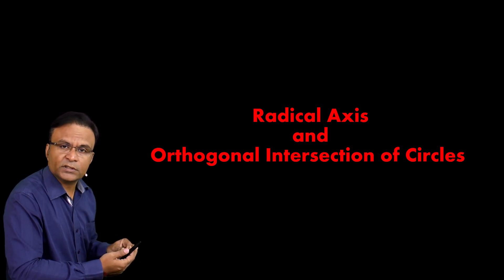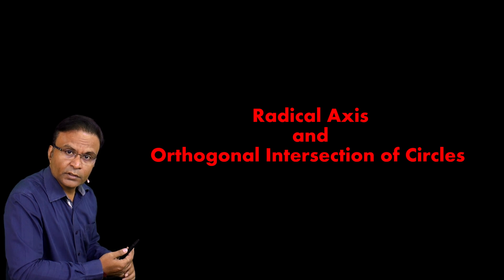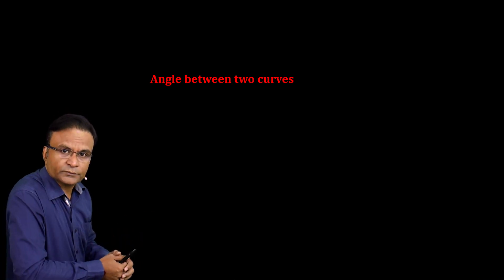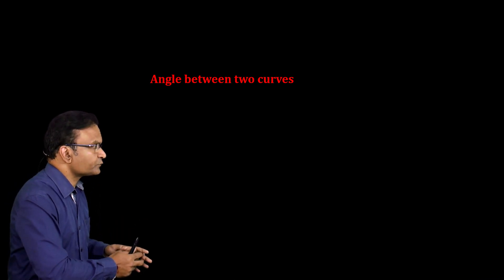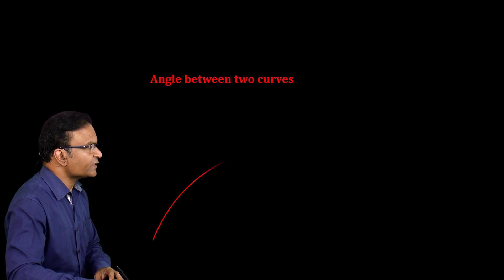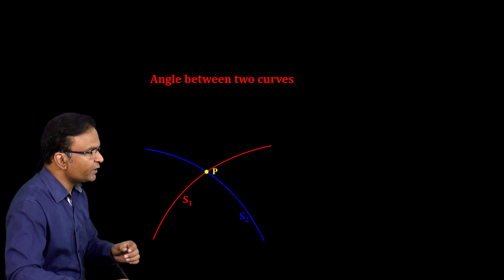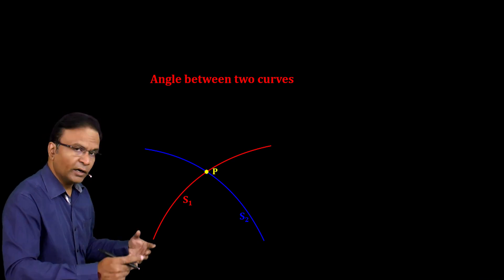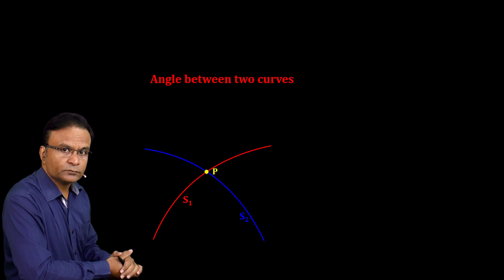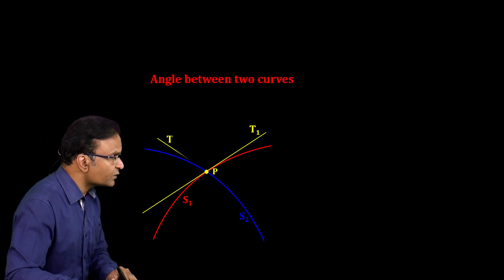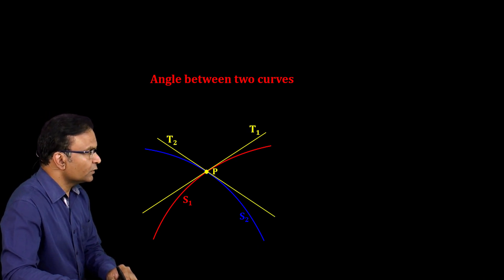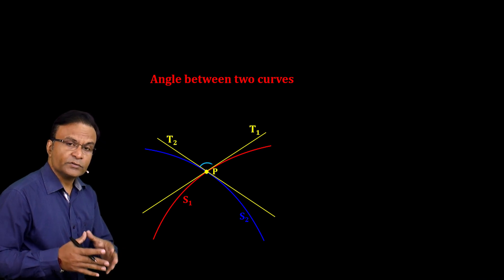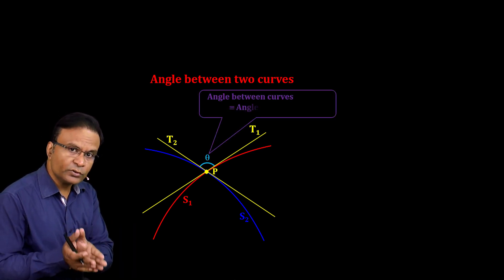Orthogonal Intersection means two circles are intersecting at right angle. How do you find the angle between two curves? Consider two curves S1 and S2 which are intersecting at point P. At point P, we have to find the angle between these two curves. We draw tangents to these curves at point P. Tangent to curve S1 is T1 and tangent to curve S2 is T2. The angle between these two curves is the same as the angle between these two tangents.